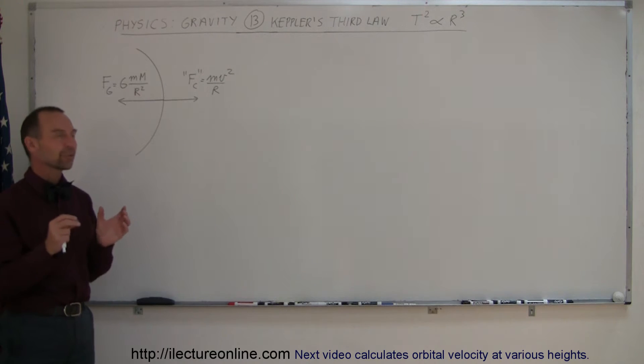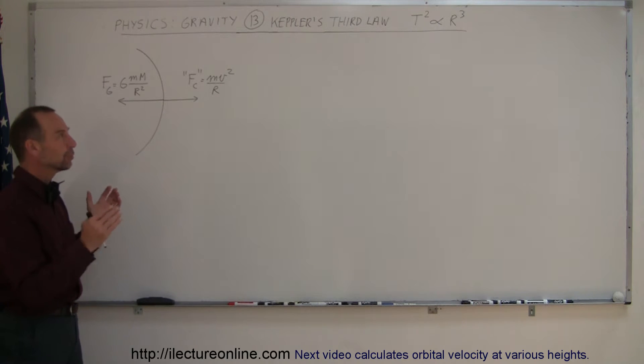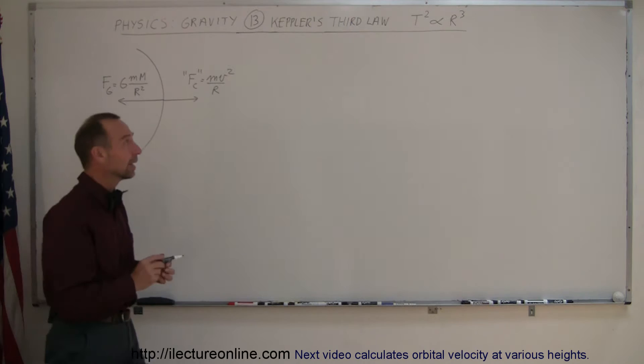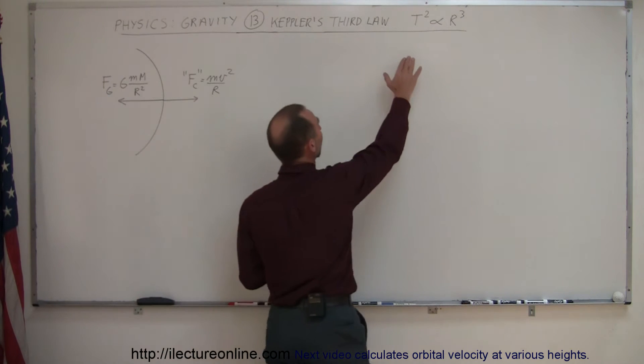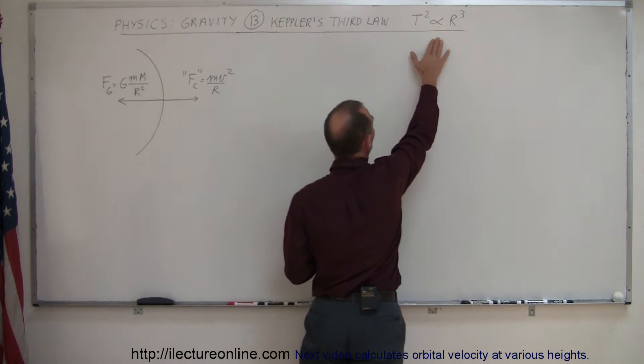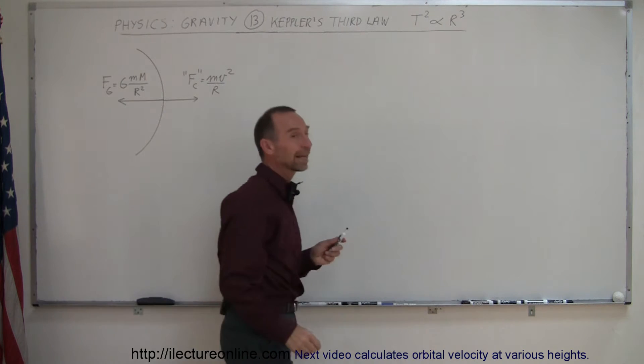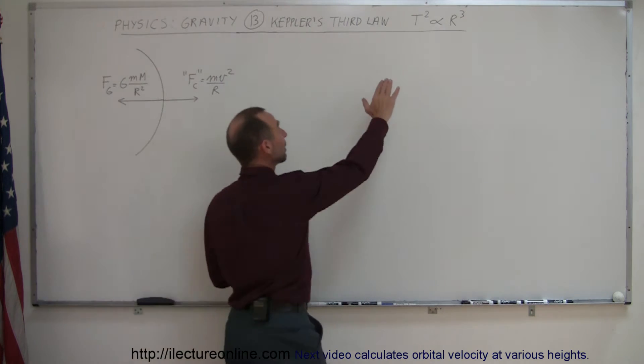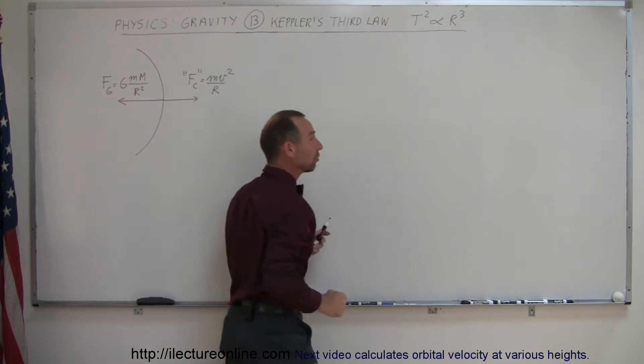Kepler's Third Law was one of the major discoveries in astronomy. He was finally able to figure out the distance from the sun to the planets by noticing an interesting relationship that the period of the orbit of the planet was proportional to the distance from the sun to that planet cubed, or I should say the period squared was proportional to the distance cubed.